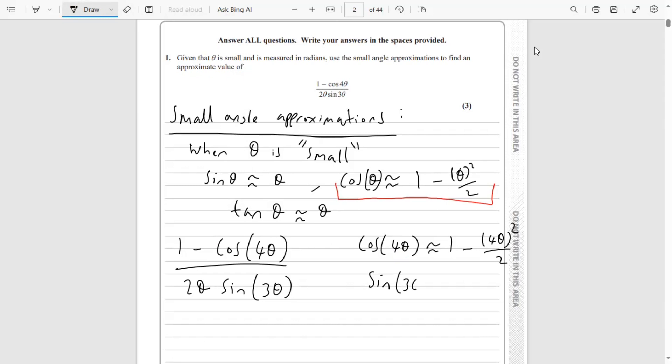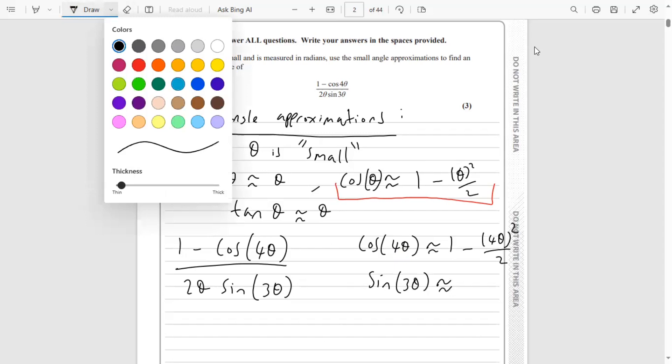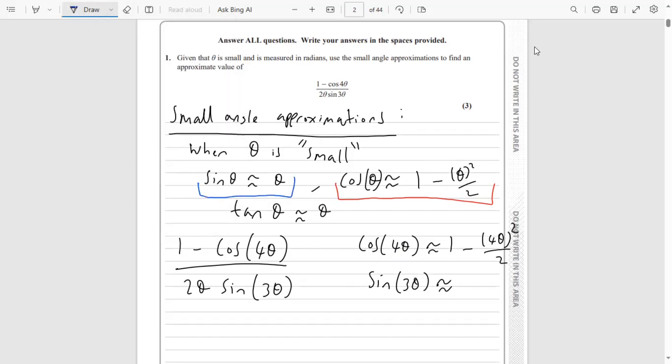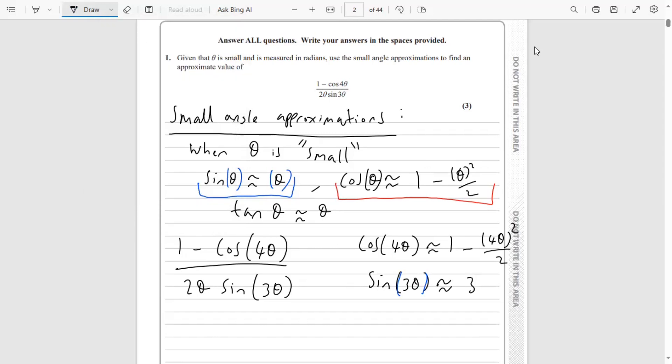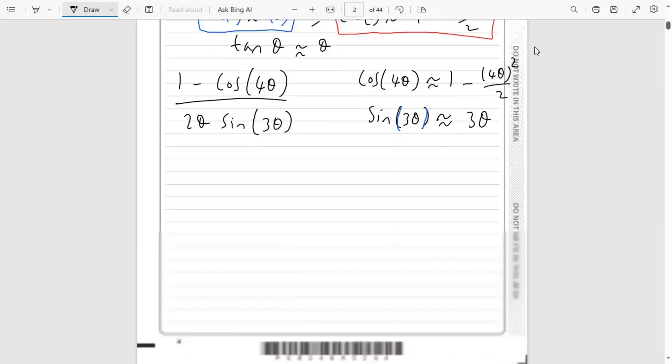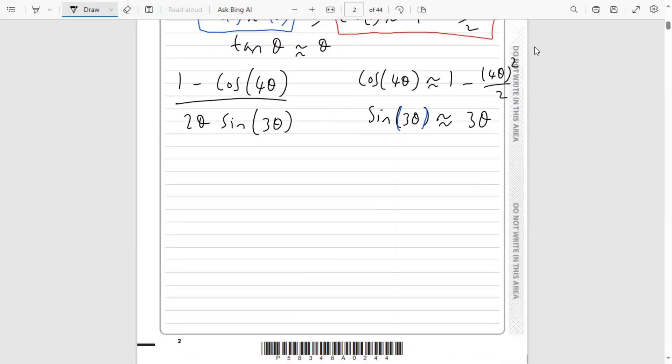With sine 3θ it's very similar but actually easier. We go to our sine θ small angle approximation and swap θ with 3θ. So if sine θ is approximately θ, then sine 3θ is approximately 3θ for a small angle.